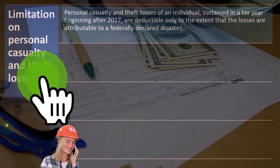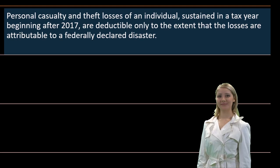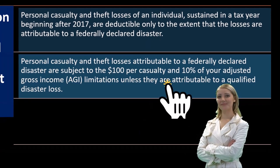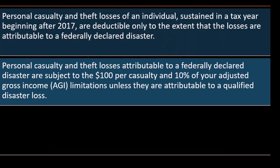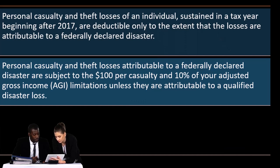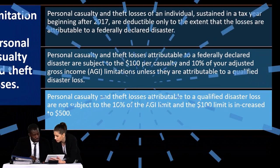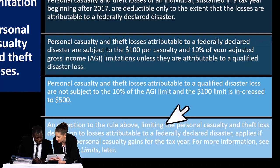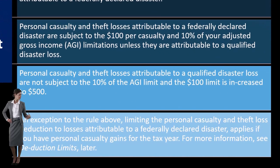Limitation on personal casualty and theft losses: personal casualty and theft losses of an individual sustained in a tax year beginning after 2017 are deductible only to the extent that the losses are attributable to a federally declared disaster. Personal casualty and theft losses attributable to a federally declared disaster are subject to the $100-per-casualty and 10% of AGI limitations, unless they are attributable to a qualified disaster loss. Losses attributable to a qualified disaster loss are not subject to the 10% AGI limit, and the $100 limit is increased to $500. An exception also applies if you have personal casualty gains for the tax year.